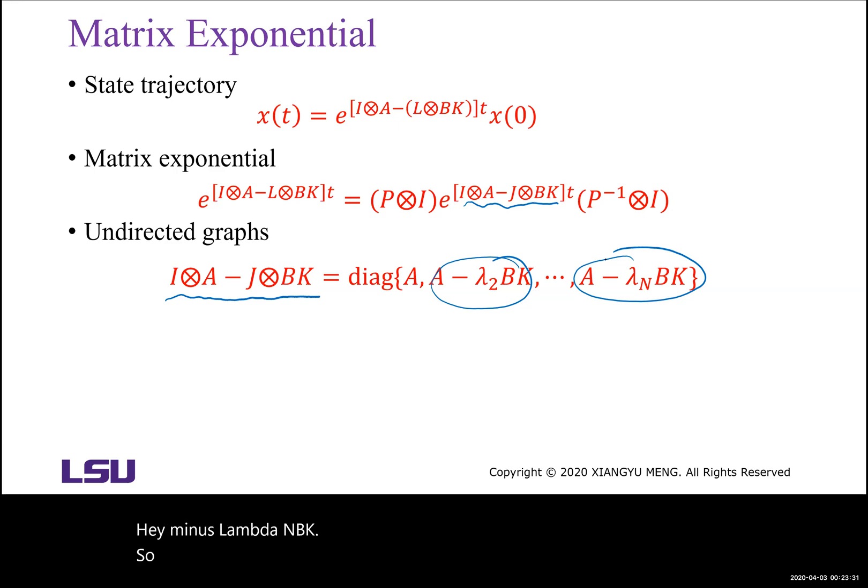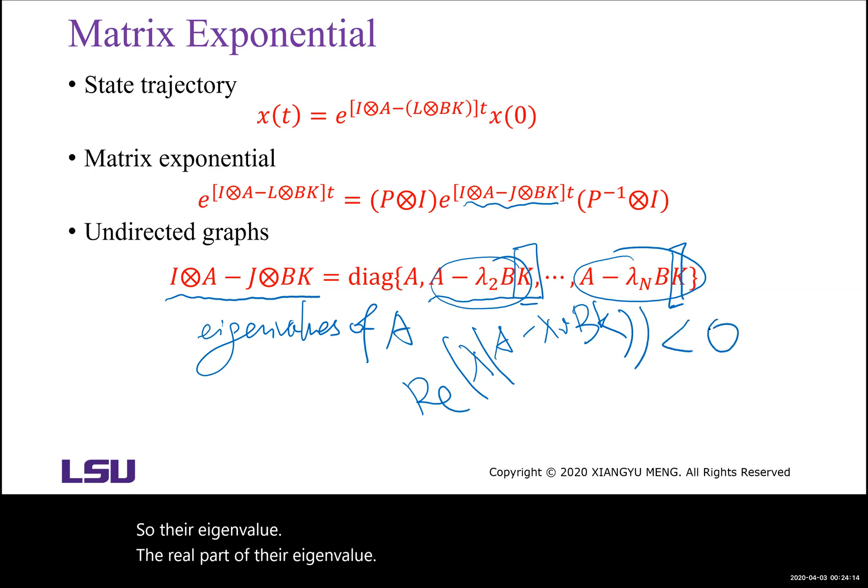To determine the eigenvalues of this matrix, we know we cannot change the eigenvalues of A. So what we can do, we can design the controller gain K to make all the matrix A minus lambda i BK have eigenvalues with negative real parts.